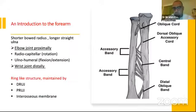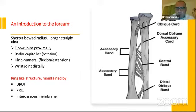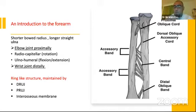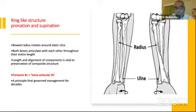To give some introduction about the forearm anatomy: there is the shorter bowed radius with longer straight ulna. The elbow joint proximally communicates by the radiocapitular joint, which controls rotation, the ulnohumeral joint, which controls flexion and extension, and also the wrist joint distally. It looks like a ring-like structure maintained by the distal radio-ulnar joint, proximal radio-ulnar joint, and the interosseous membrane. This concept of ring-like structure is essential for pronation and supination because the bowed radius rotates around the static ulna.